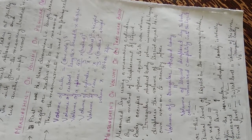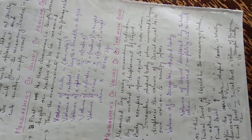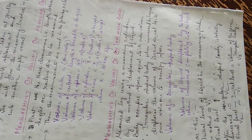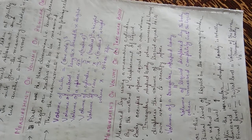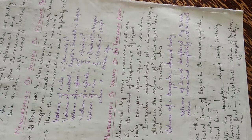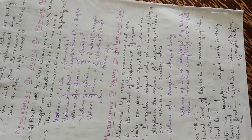For this, we take a measuring cylinder and pour some liquid in it, then note down the level of the liquid — for example, V1. We then take the irregular object and totally immerse it inside that liquid. We note down the new level — for example, V2. The final level minus the initial level, that is V2 minus V1, will be the volume of the irregular body, V3.